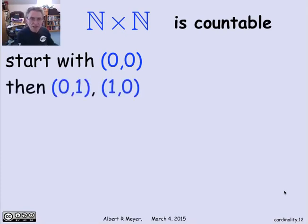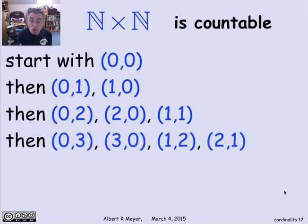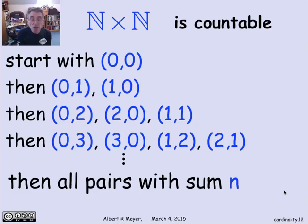Let's start listing the pairs of non-negative integers. After (0,0), list two pairs: (0,1) and (1,0). After them, list three pairs: (0,2), (2,0), and (1,1). After them, list (0,3), (3,0), (1,2), (2,1). What I'm doing is listing the pairs in the order of the sum of their coordinates. The nth block of pairs will be all pairs whose two coordinates sum to n — there are n+1 of those.